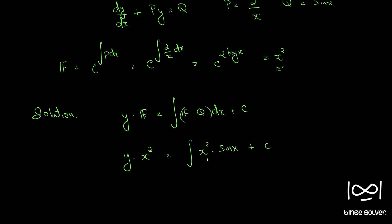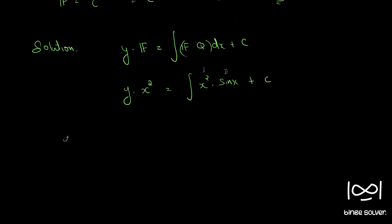We have to find this integral. We can use integration by parts. We select x squared as the first function and sin x as the second function. So y x squared equals differential of first, 2x, into integral of second, which is minus cos x.